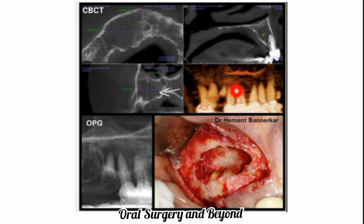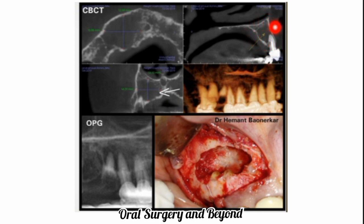Here is a radicular cyst associated with a premolar and molar in the maxillary posterior region. On axial, coronal, and sagittal CBCT sections, the cyst is large — approximately 20 mm by 12 mm — with a well-demarcated cortical border. The OPG presentation is shown. After enucleation and apicectomy, the pathologic lining was removed and sound posterior bone was visible.